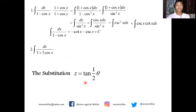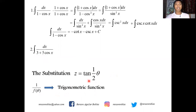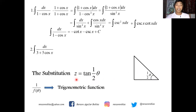When do we use this substitution? When the integral contains an expression of the form 1 over f(θ), where f(θ) is a trigonometric function. This substitution allows us to use a right triangle where the angle is half theta, so that tangent of half theta equals opposite over adjacent equals z over 1, making the hypotenuse equal to the square root of 1 plus z squared.